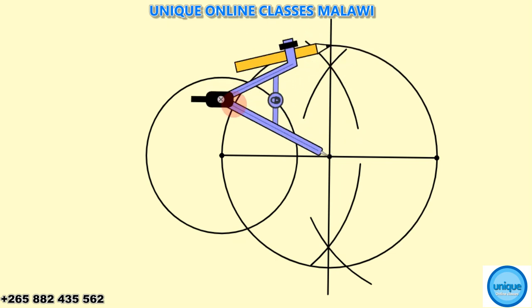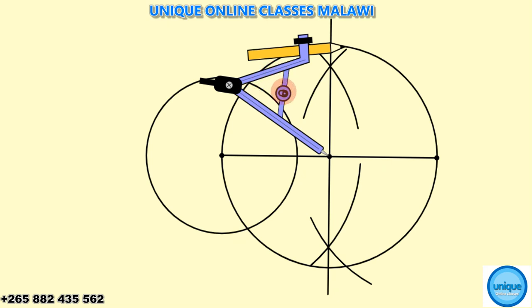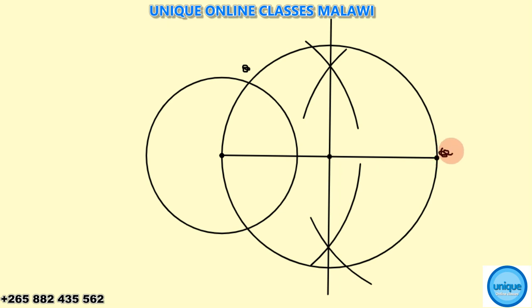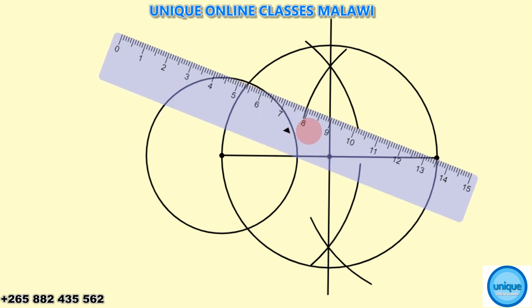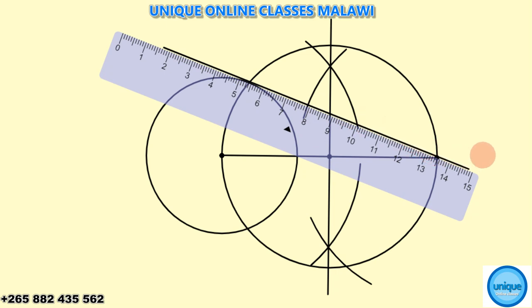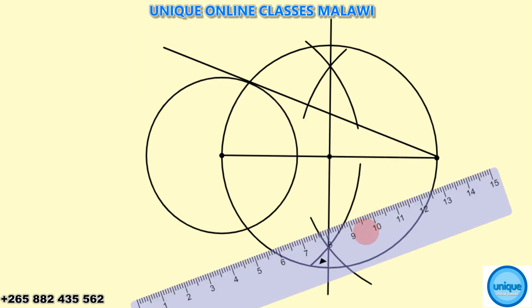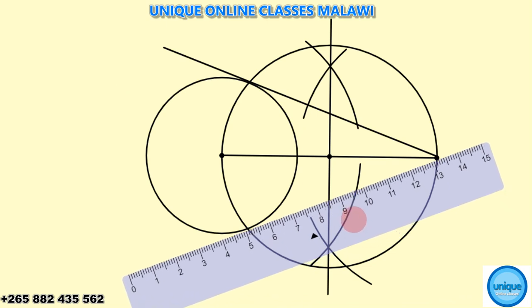Now the next thing you need to do is join the point. I'm going to take a ruler. Let me join that point. And also the other side, let me join that point.